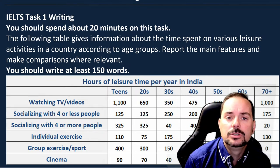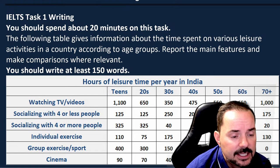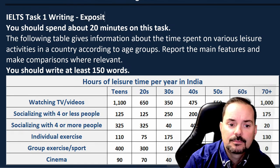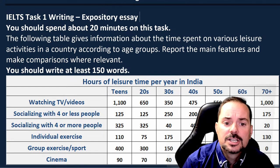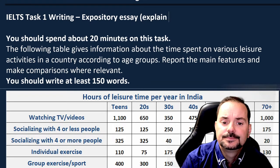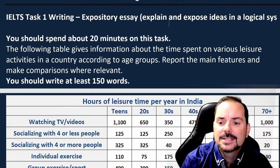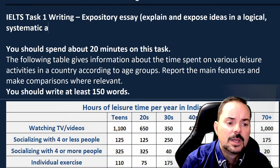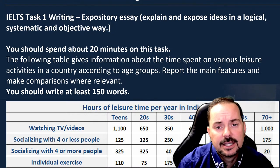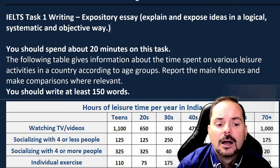I'm going to explain what to do and how to do it, and I will get you to help me — sharing your English, your vocabulary, your sentences, your ideas. Task 1 of the academic IELTS is an expository essay. An expository essay seeks to explain or expose ideas in a logical, systematic, and objective way. The reason for this in the academic IELTS is that you do a lot of expository writing in university, in work, and in professional life. It's objective.